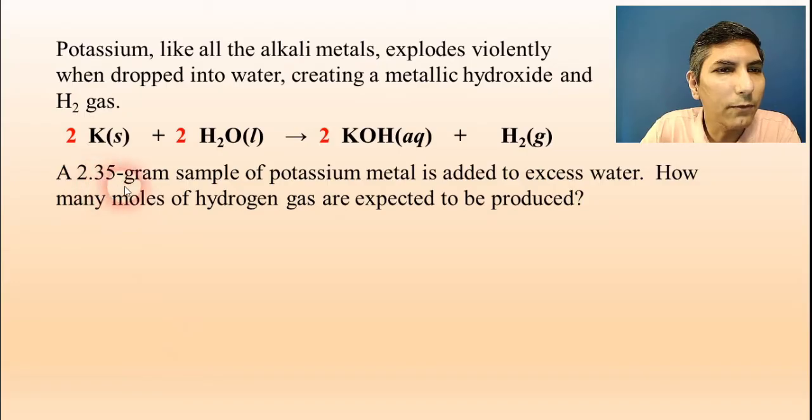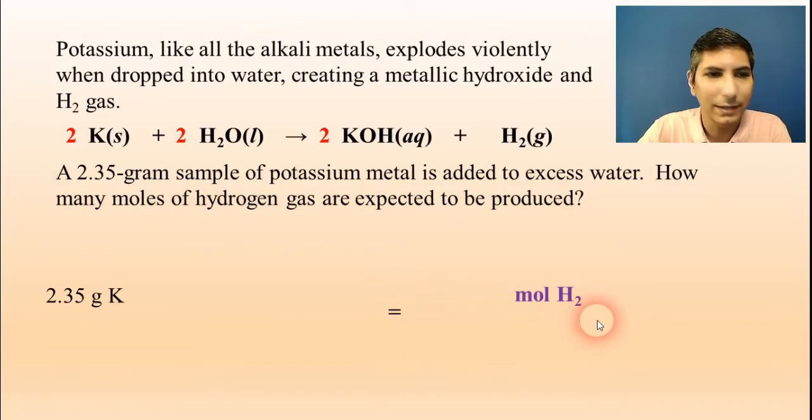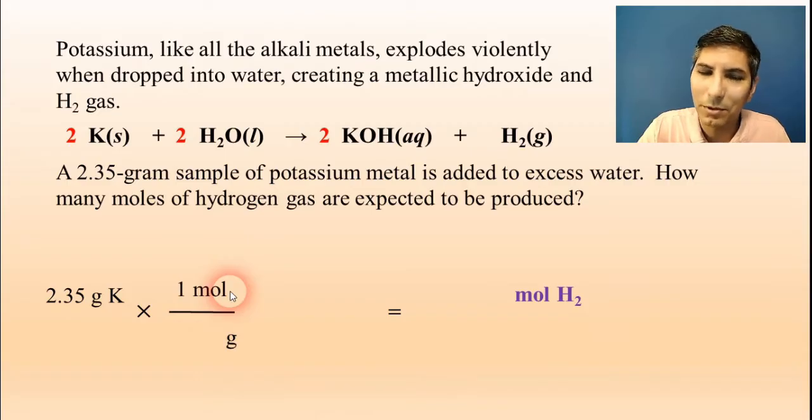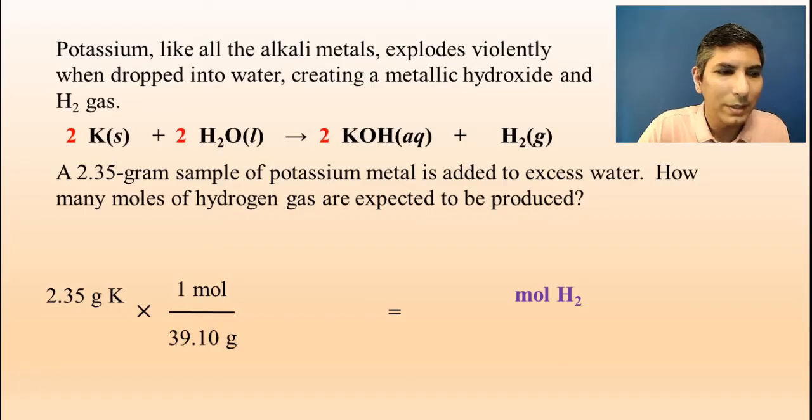I'm starting with 2.35 grams of potassium, so I write that down. The question asks, how many moles of hydrogen gas? So this time at the end, I'm trying to solve for moles of hydrogen gas, H₂. Let's go through our three steps. Step one is convert to moles. I have to put grams on the bottom, and one mole goes on the top, since I'm converting to moles. How many grams are in a mole of potassium? Look at the periodic table. It's about 39.10. That's the atomic mass of potassium. Now I can cancel grams, and I'm in moles of potassium.